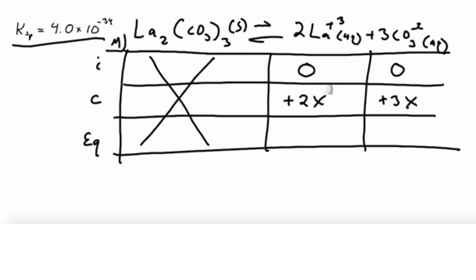At equilibrium, we're just adding our original concentration to our amount that we change. So this just ends up being 2x, and this ends up being 3x. Then we write our expression for Ksp. So Ksp is going to be products over reactants. So for products, we've got concentration of lanthanum. It's got to be squared, because we have two of those ions. Our concentration of carbonate, which has to be cubed. We've got three of those. Then we divide by the reactants, but since those are solids, we know that we don't include those in the Q or the equilibrium constant.